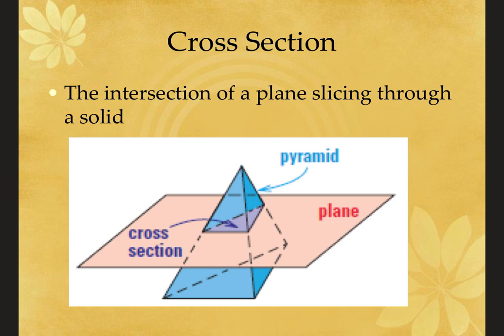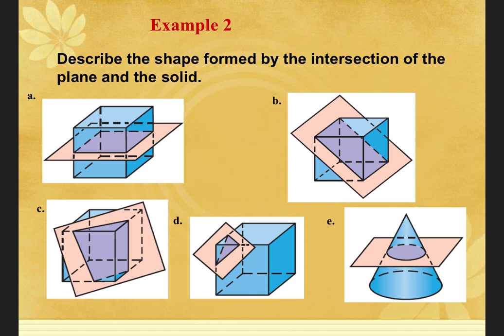A cross section is the intersection of a plane slicing through a solid. Picture a solid and then a plane sliding through and cutting it — when you open up that solid and look at where it was cut, the shape you see is the cross section. In this diagram I have a triangular pyramid, and where the plane slices through would leave a triangle, so the cross section is a triangle.